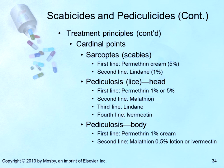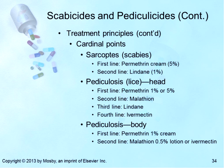Spinosad is a new treatment for head lice in patients 4 years of age or older. Apply to cover dry scalp using up to a 120 mL bottle; leave on for 10 minutes then rinse thoroughly with warm water. A second application may be needed if lice are still seen 7 days after the first treatment. For body lice, first-line treatment is permethrin 1% cream rinse applied to affected areas and washed off after 10 minutes, or pyrethrin with piperonyl butoxide. Second-line is malathion 0.5% lotion applied for 8 to 12 hours and washed off, or ivermectin 0.15 to 0.2 mg/kg repeated in 2 weeks.